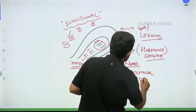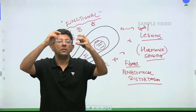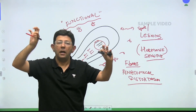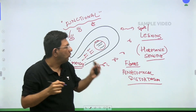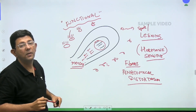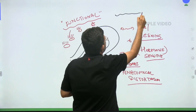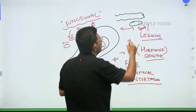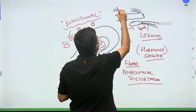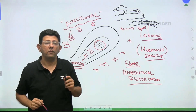Anatomical distortion means: if this is the ovary and this is the fimbria, because of adhesions the ovary gets pulled one way and the fimbria gets pulled another way — the fimbria cannot pick up the egg. Normally the fallopian tube and ovary have a proper relationship, but one adhesion pulls the tube here and another pulls the ovary elsewhere, distorting their anatomical relationship. We will come to that in more detail.